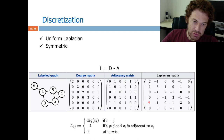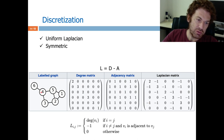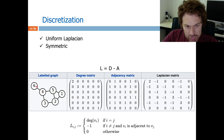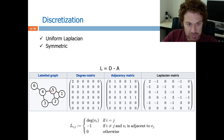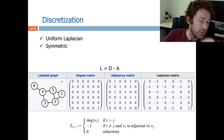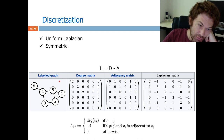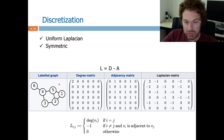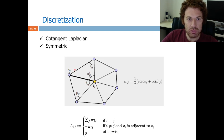The bad news is this is uniform, meaning that when processing a vertex I get the same contribution from all neighbors. In general, one neighbor might be at a distant location, so I really want less contribution from it. I want something geometry-aware, and to get that I go to the popular cotangent Laplacian.